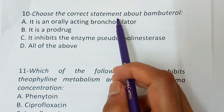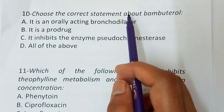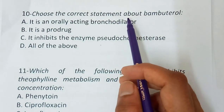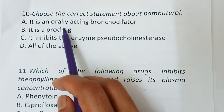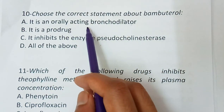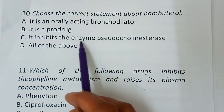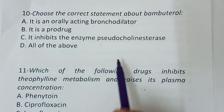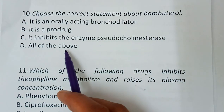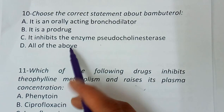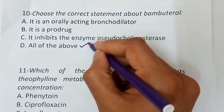Question number ten: Choose the correct statement about bambuterol — it is an orally active bronchodilator, it is a prodrug, it inhibits the enzyme pseudocholinesterase, or all of the above. The correct answer is all of the above.